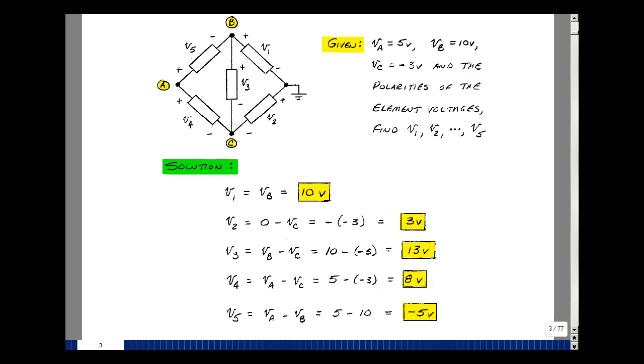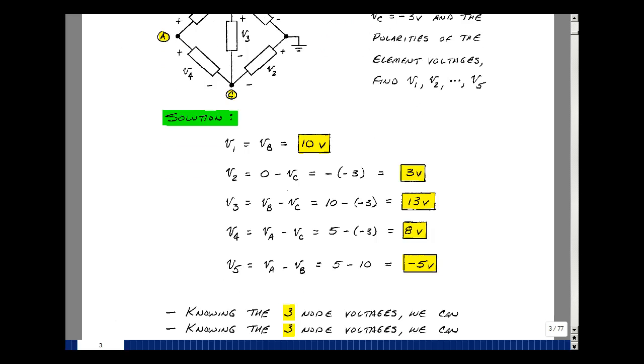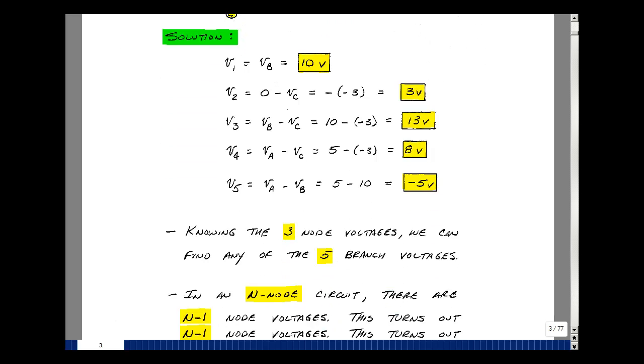So again, we can assign voltages across elements, and they may turn out to be positive or negative. It's just, you pick a orientation of the signs and you're just going to solve for it. What's interesting here is that we found three node voltages in the circuit, and there are five element or branch voltages, and we're able to find all of those in terms of the node voltages.